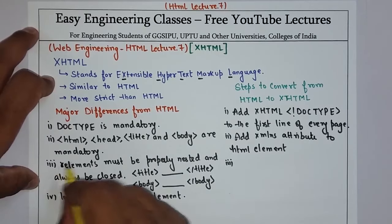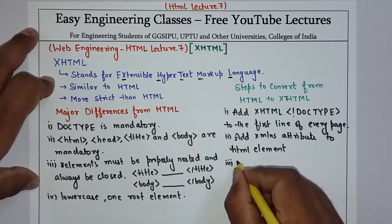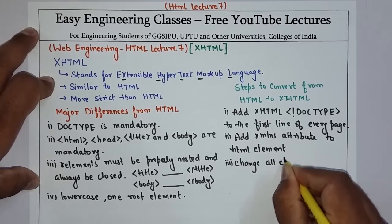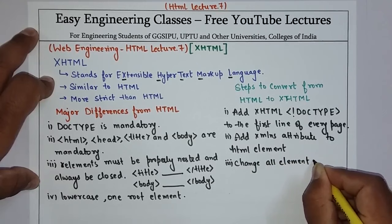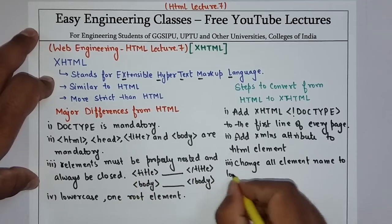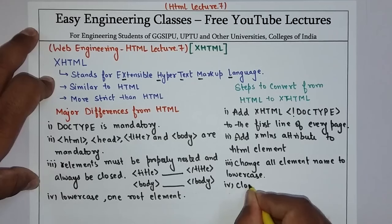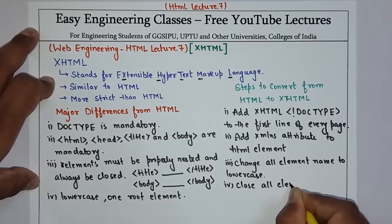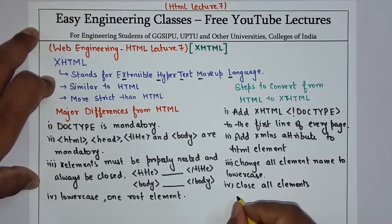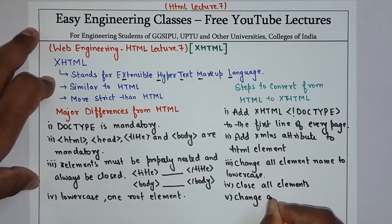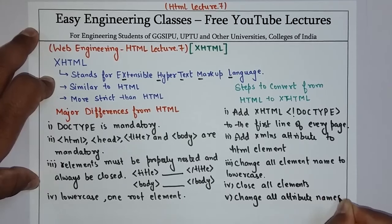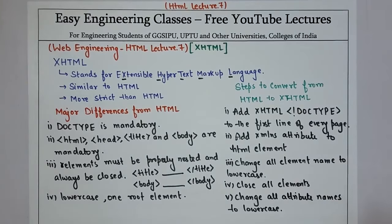Next, you have to change all element names to lowercase. Then, change all attribute names to lowercase as well. These are some of the steps that you need to follow to convert an HTML document into an XHTML document.